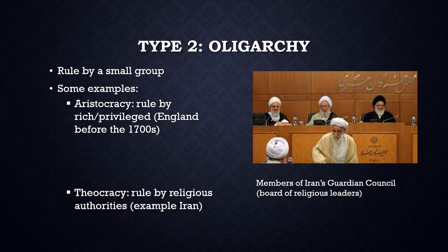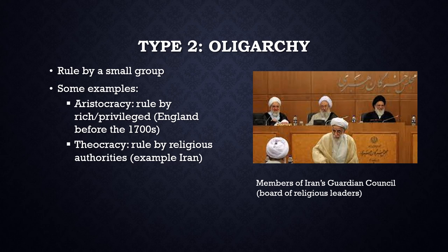Another type of oligarchy is a theocracy. Theocracies are governments where power is held by a group of religious leaders who govern according to the principles of their religion. Iran is a good example of a theocracy today, where power is shared by a group of religious leaders called the Guardian Council. Interestingly, the colony of Massachusetts before the United States came to be was a theocracy for more than half a century. The Puritan leaders ruled Massachusetts according to Puritan principles in the 1600s and were very repressive, and many non-Puritan colonists left Massachusetts seeking freedom from religious extremism.